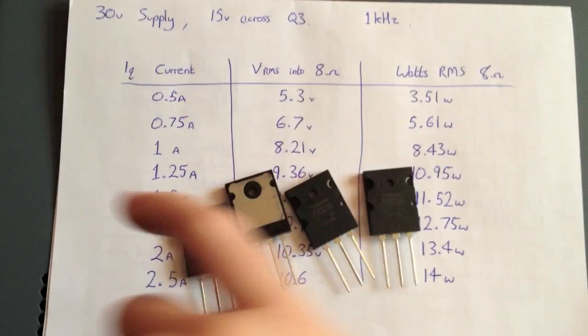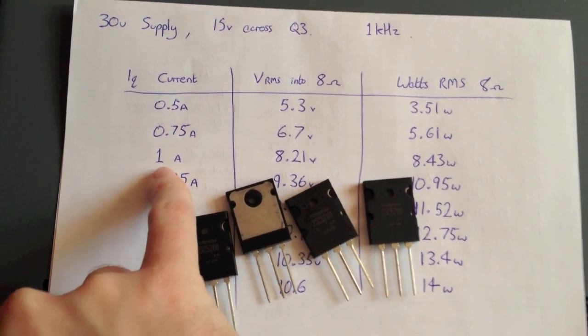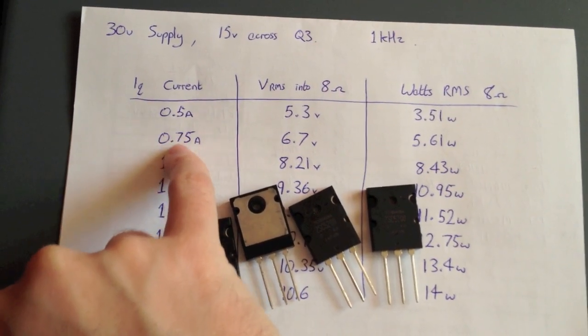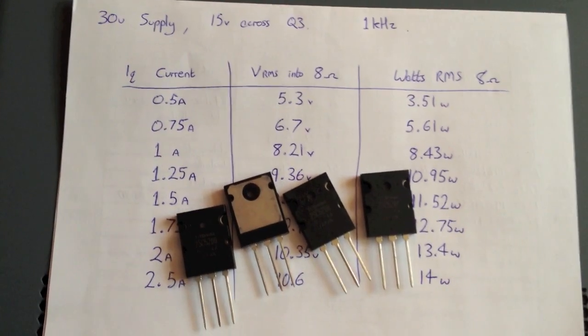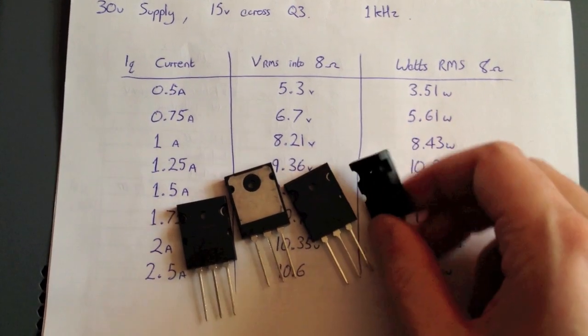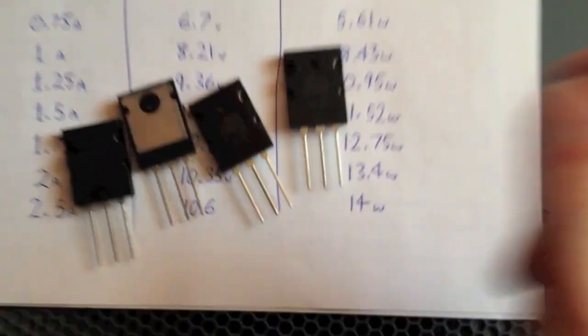One more quick thing to note: I've got mine set to one amp idle current once stabilized, but when you turn it on from cold it draws about half an amp, creeps up to one amp, and stabilizes there. It doesn't take long. Originally I was going to use these transistors.